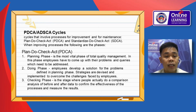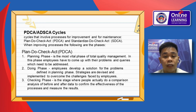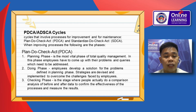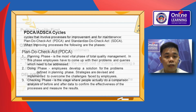For the PDCA cycle — Plan, Do, Check, Act. The planning phase is the most vital phase of total quality management. In the doing phase, employees develop a solution for the problem defined in the planning phase. In the checking phase, people do a comparison analysis of before and after data to confirm effectiveness of the process and measure the result.